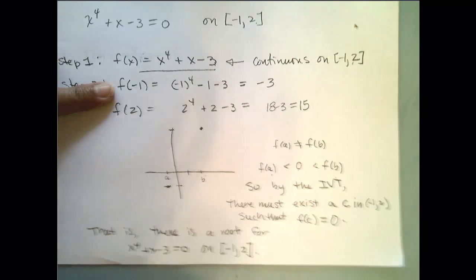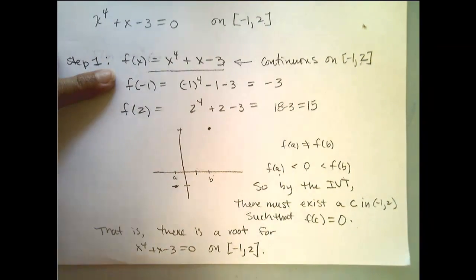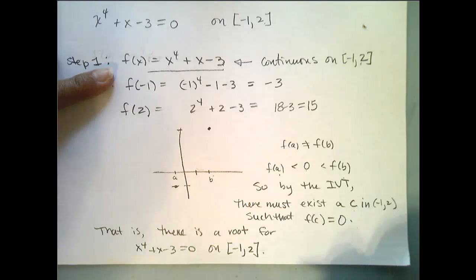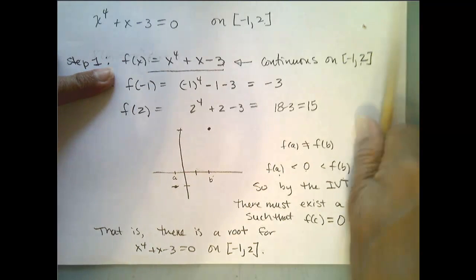Now, notice what the Intermediate Value Theorem doesn't tell us. It doesn't tell us what that root is, it just tells us that one exists. So we're done.